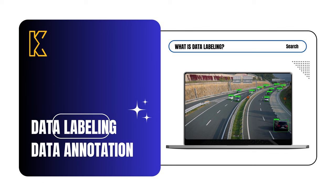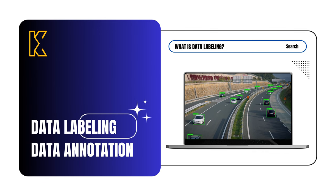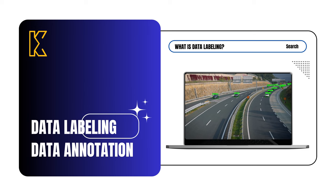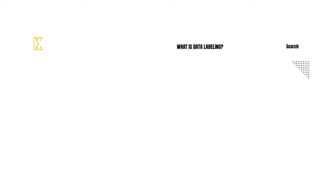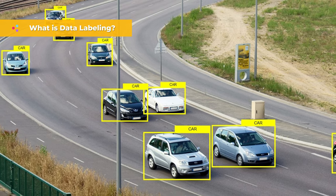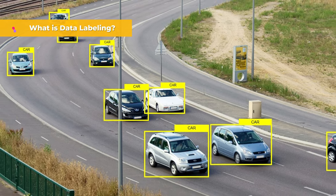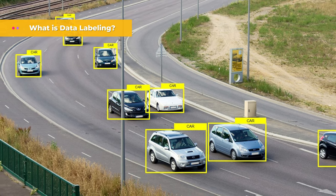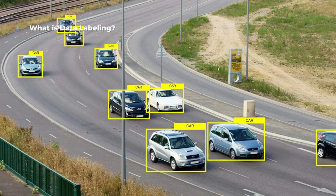This is where data labeling, also known as data annotation, comes into play, serving as the vital bridge between raw data and actionable insights. Data labeling is the process of adding meaningful tags or annotations to raw data, enabling machines to understand and learn from it.